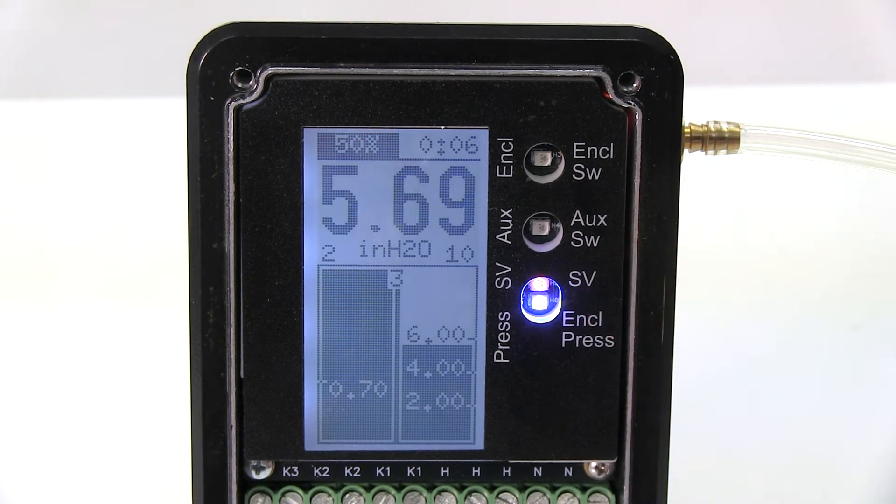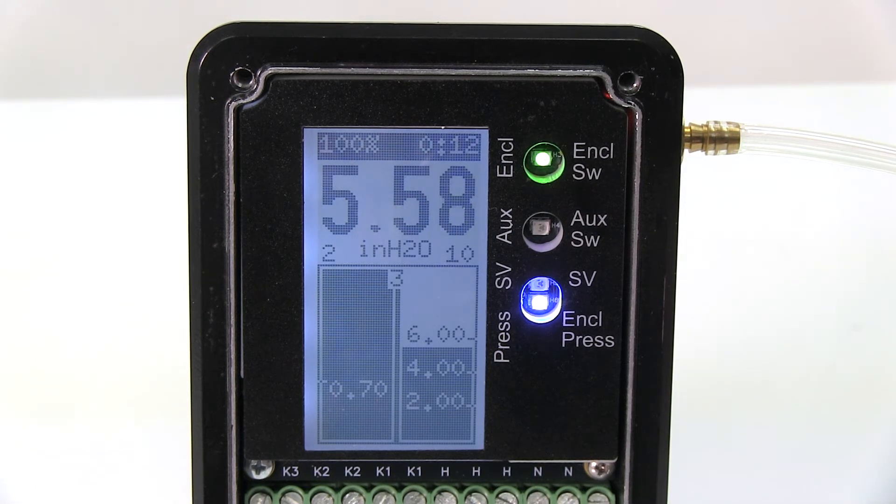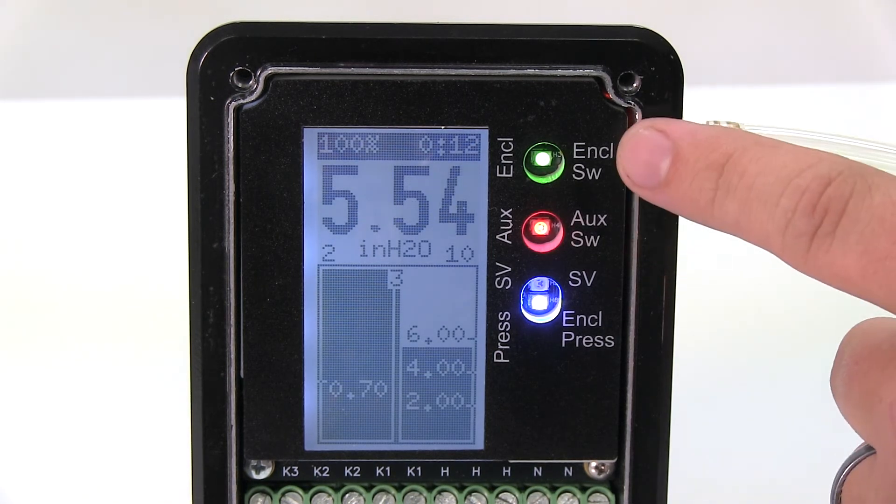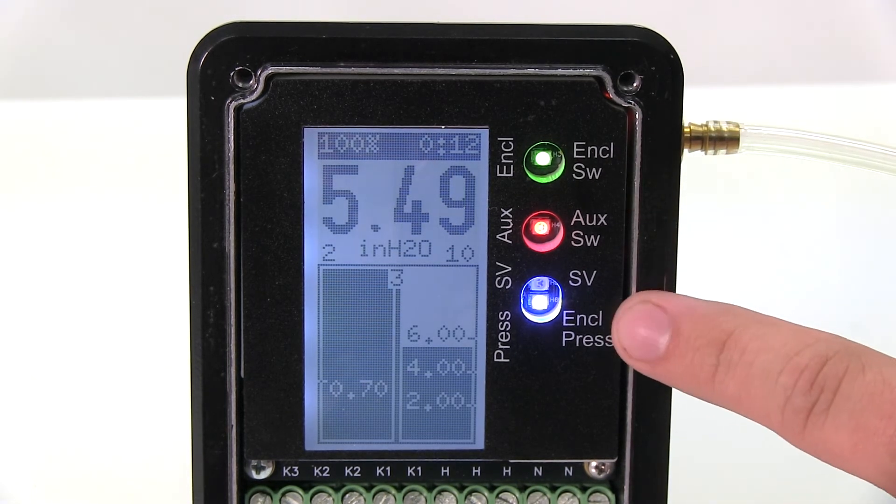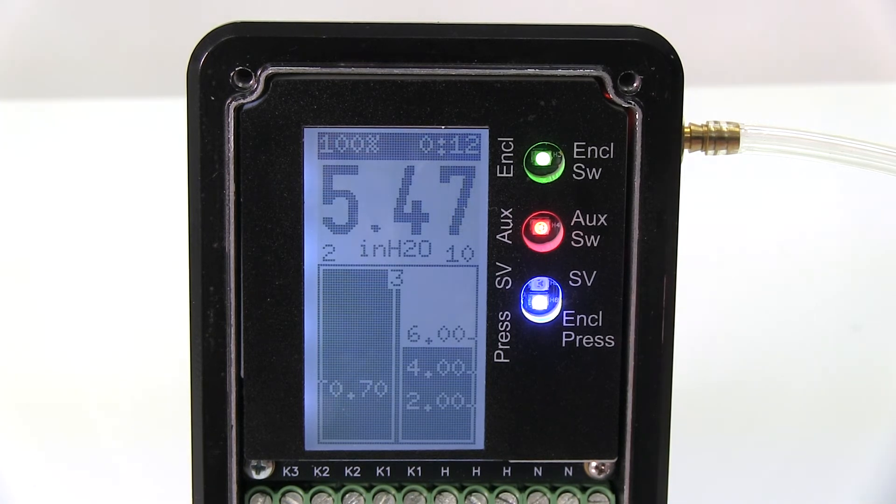Our solenoid is still active as shown by the amber LED. So now we're going through a purging cycle. Once our purging cycle is complete, our enclosure LED turned on, and we have safe enclosure pressure.